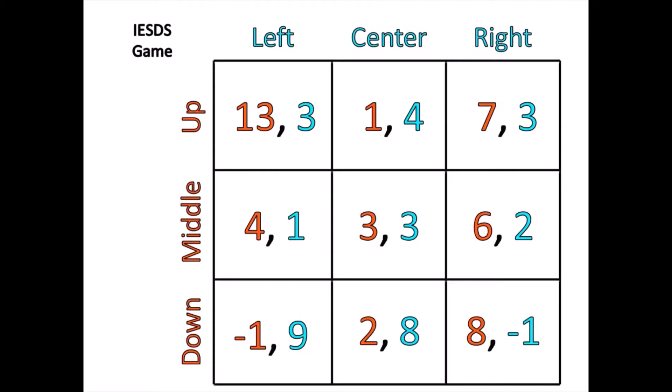I want you to notice something about player 1's strategies here. If player 2 were to go left, then player 1's best strategy is to play up because 13 is greater than 4 or negative 1. But if player 2 were to play center, then player 1 should want to play middle because 3 is greater than 1 or 2. And if player 2 were to play right, then player 1 would want to play down because 8 is better than 7 or 6. So based on what player 2 is doing, player 1 has a different best response.